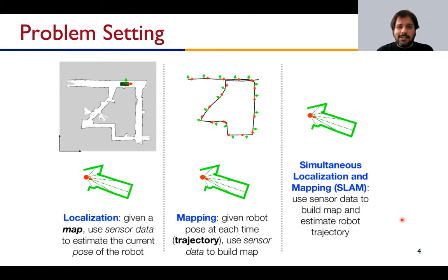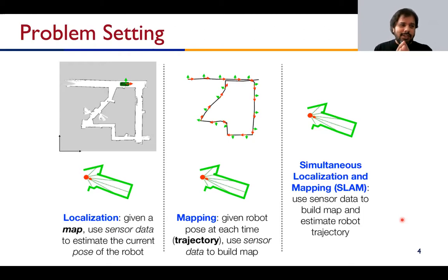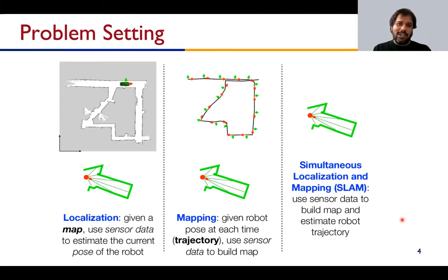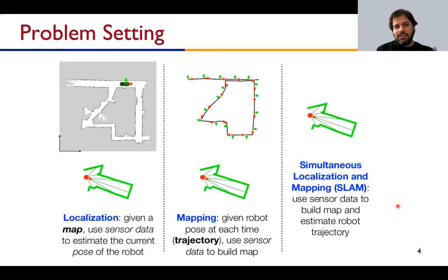In mapping, you are given the pose of the robot at every step — a sequence of poses also called a trajectory — and using sensor information at every pose you combine and aggregate all that information into a map. You can see how to build the map you need localization, and to localize you need a map. Simultaneous localization and mapping asks: can we use sensor data and pose information at every time step to estimate both the trajectory and build the map as the robot explores?